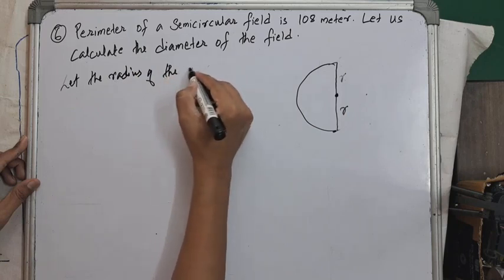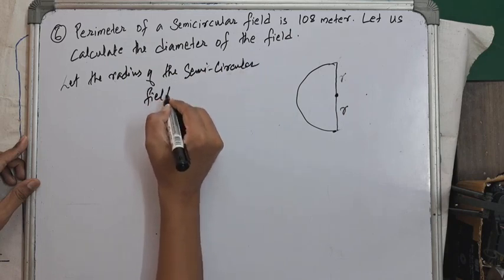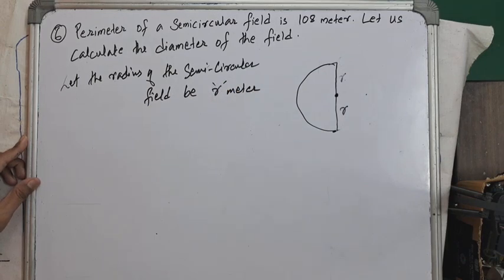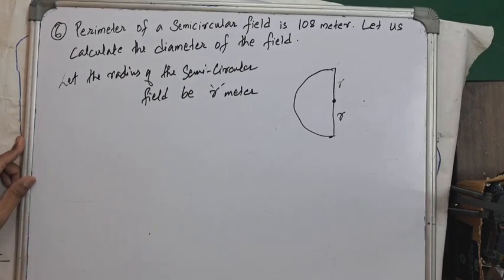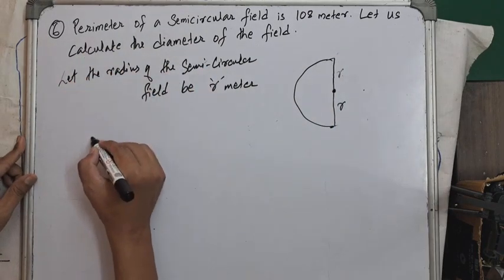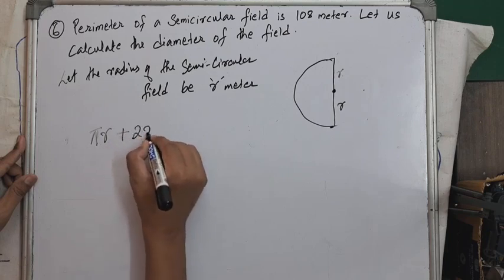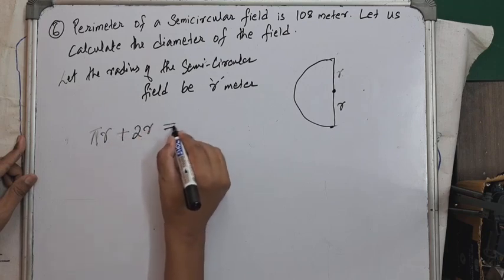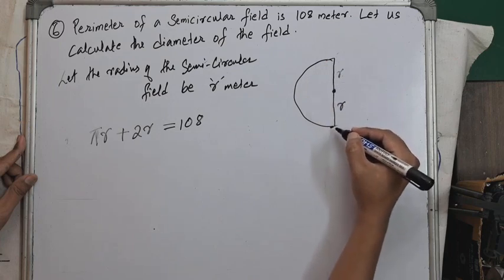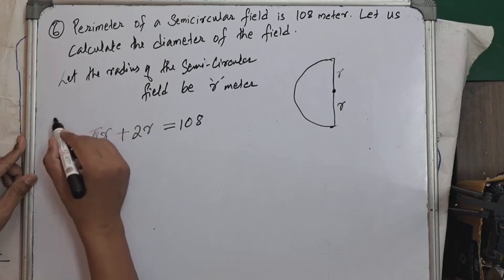Let the radius of the semicircular field be r meters. It is given that the perimeter of the semicircular field is 108 meters. So we write: πr + 2r = 108, where πr is the curved part and 2r is the diameter.